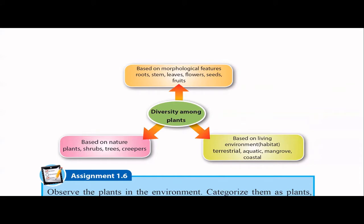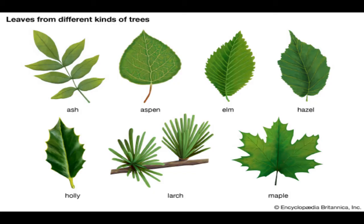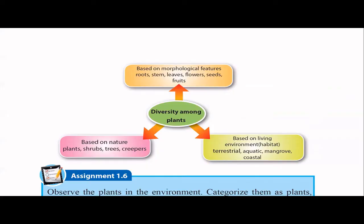When it comes to leaves, we can see various differences. Some leaves have a pointed tip, some have wavy margins. Some plants have a single leaf blade, while others have leaflets. Based on leaves alone, you can see many differences among plants.